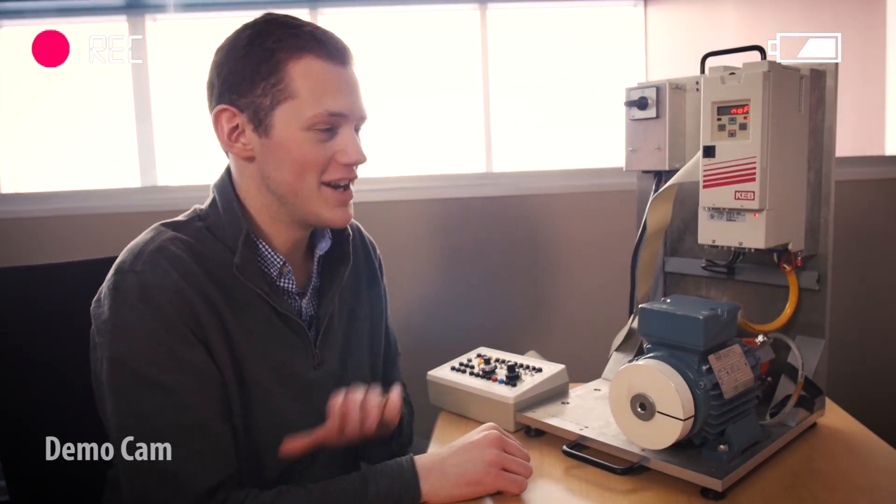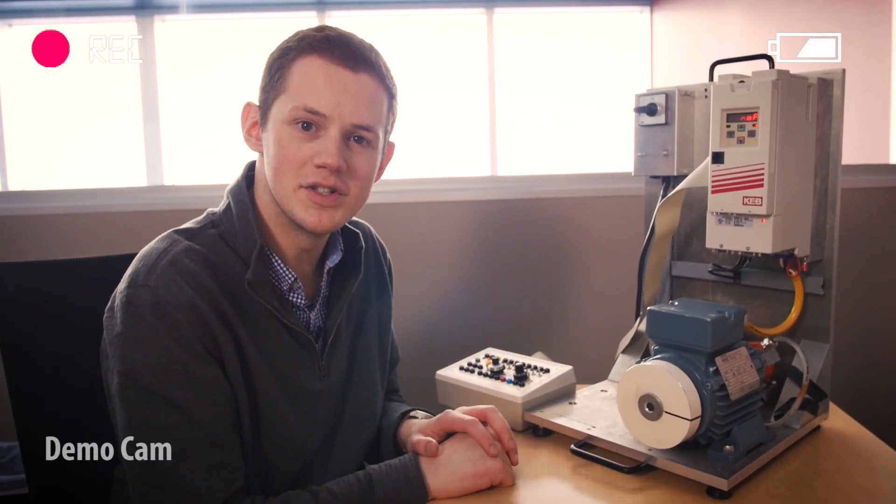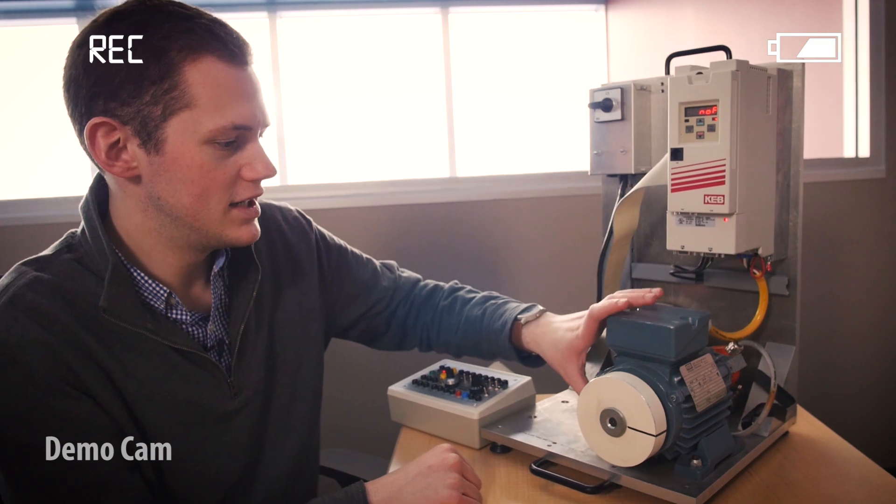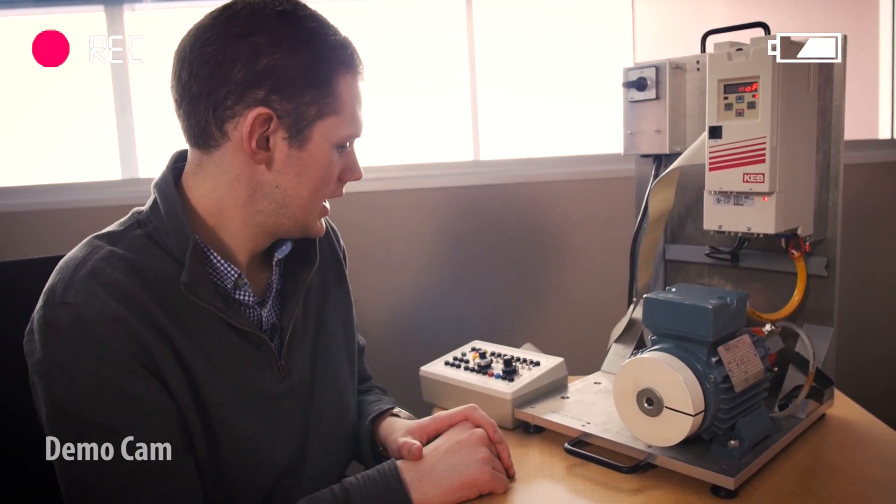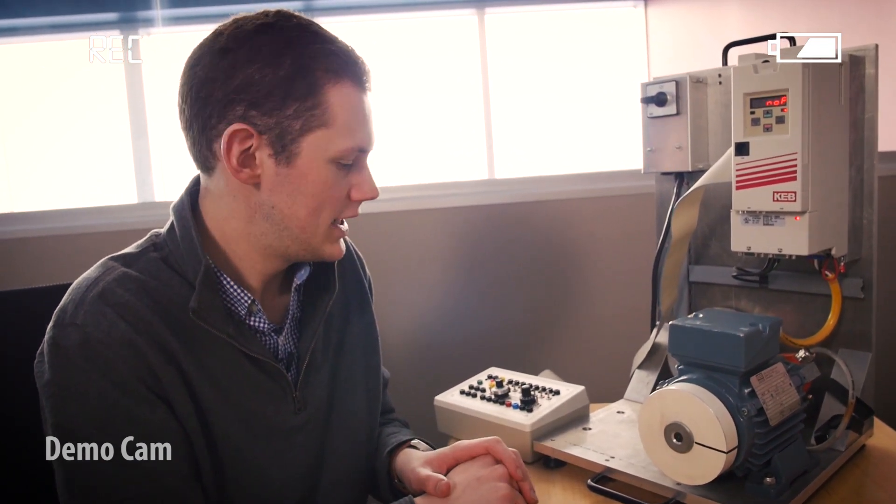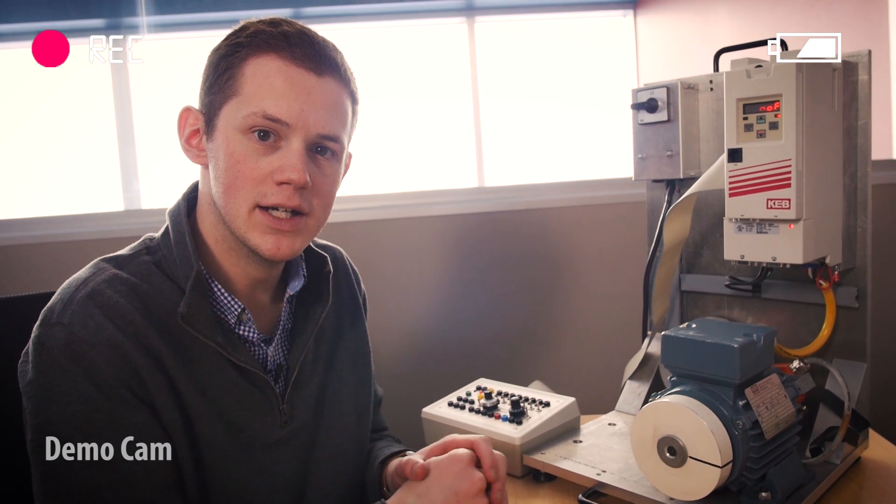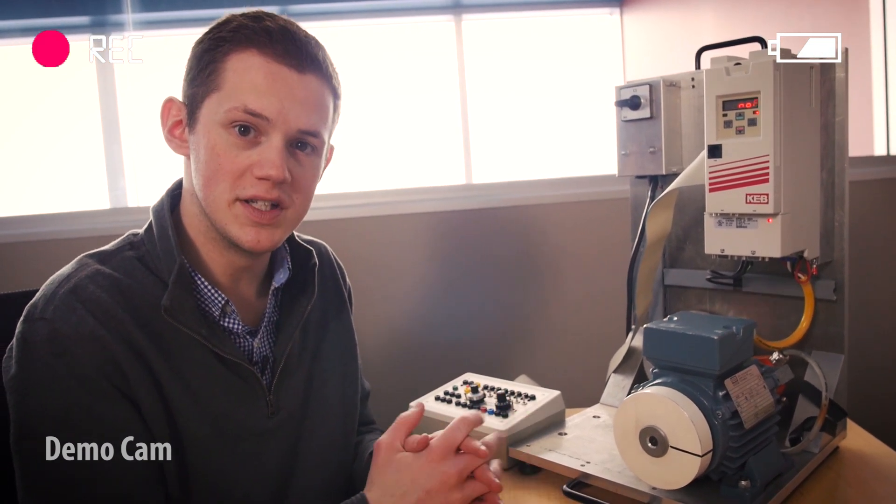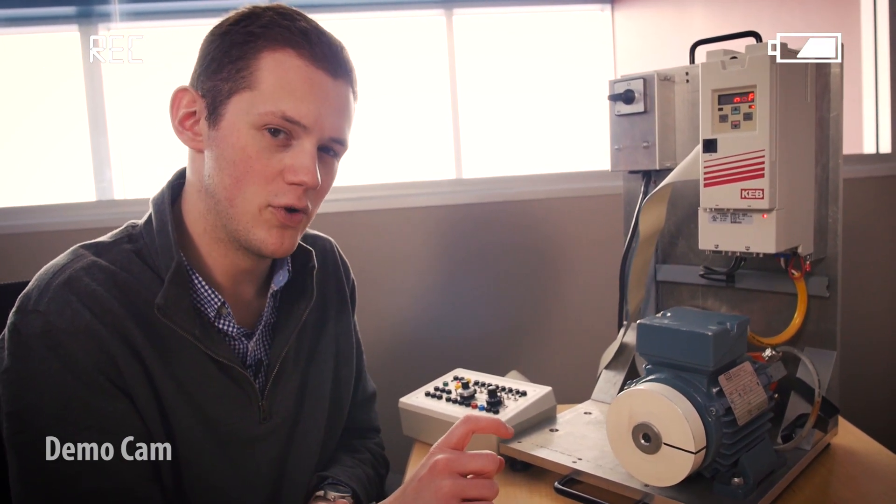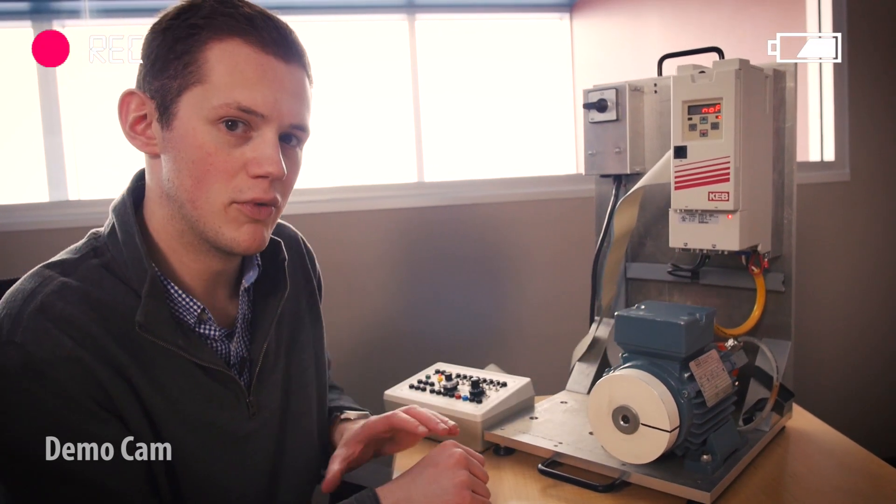So would you be able to give me a demonstration using the setup here of how DC injection braking works? Of course, yeah, we can set it up and show you with and without DC braking. All right, here we have a little demo setup to demonstrate DC braking. We have an F5 drive that's programmed into an open loop configuration and a small AC three-phase induction motor here. In this drive, I have programmed default parameters for open loop control and in open loop drives from KEB, we have default parameters set up for DC braking capability. The only modification I made for this example is I lowered the maximum voltage just slightly, just to accommodate the smaller motor here for our example.